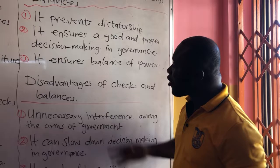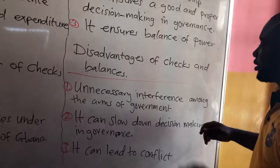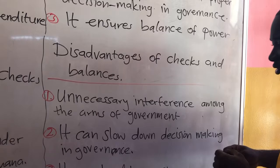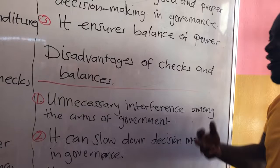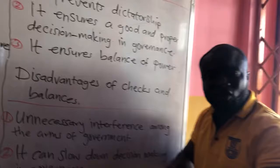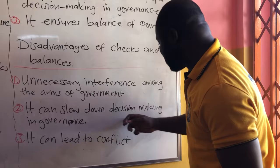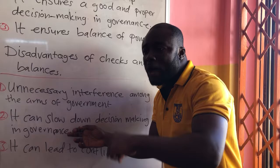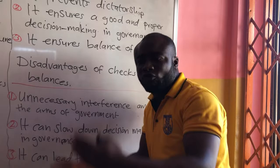Now let's move to the disadvantages of checks and balances. First, it promotes unnecessary interference among the arms of government — one arm of government will unnecessarily check the other, which is not necessary. Second, it can slow down decision making in government. If a decision is to be taken, one arm of government must start the process, moving it to another arm of government, before a final decision can be taken. So it causes delays.